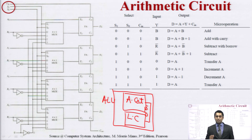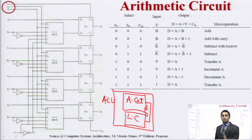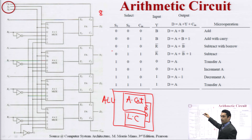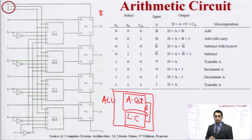The number of multiplexers equals the number of bits. So for 8 bits, 8 multiplexers are required; for 4 bits, 4 multiplexers are required. This is the important takeaway. In the next lecture we will see about logic and shift operations.